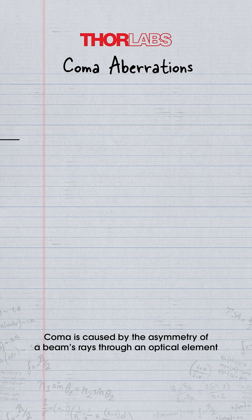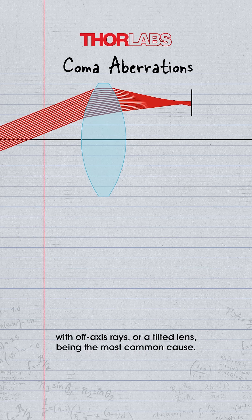Coma is caused by the asymmetry of a beam's rays through an optical element, with off-axis rays or a tilted lens being the most common cause.